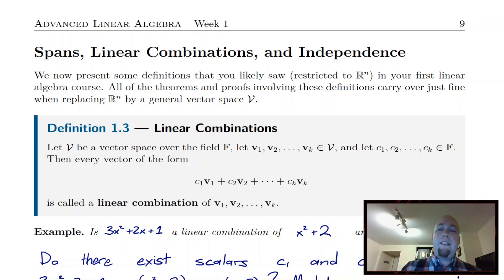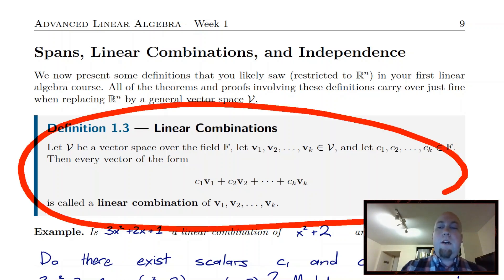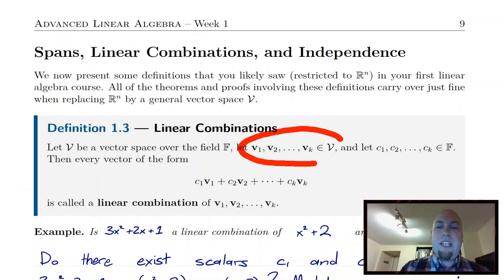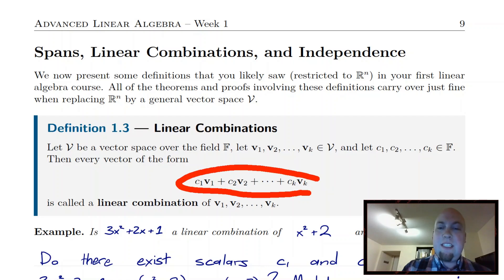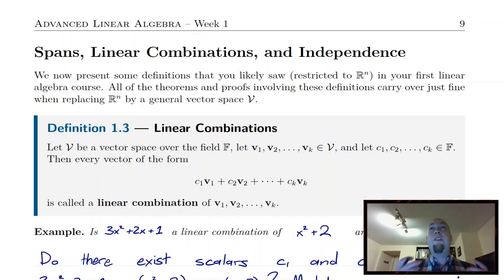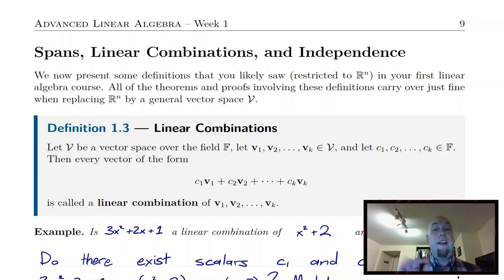The idea behind a linear combination is you start off with some fixed set of vectors in your vector space — v1, v2, up to vk, those are fixed and given to you ahead of time. Any vector that you can construct using the two basic vector space operations, scalar multiplication and vector addition, any vector of that form is called a linear combination of the starting vectors v1 up to vk.